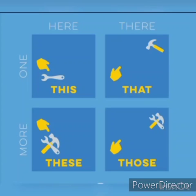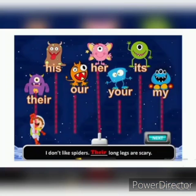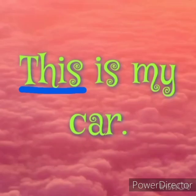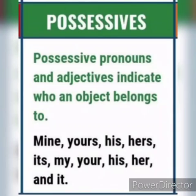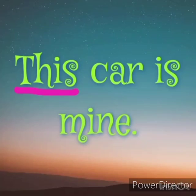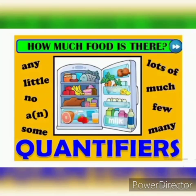The third kind of determiner is possessive. The words 'my', 'your', 'his', 'her', 'its', 'our', and 'their' are possessives. They function as adjectives or pronouns. Possessive adjectives come before the noun they refer to — for example, 'This is my car.' Possessive pronouns are placed after the nouns they refer to — for example, 'This car is mine.'